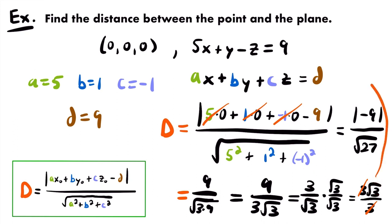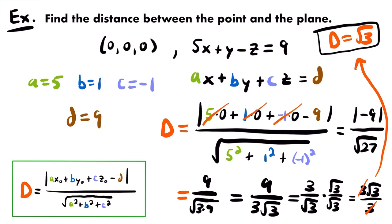So the distance is equal to √3. That is the final answer. The square root of 3 is approximately equal to 1.73. The square root of 3 is the distance between this point and this plane in the 3D coordinate system. That's how you use this formula to find that distance.